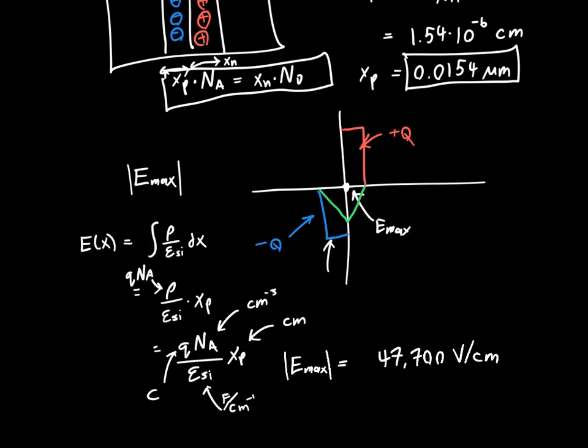If we want to know the direction it's pointing, we just know that it's pointing from the positive charges to the negative charges, but the magnitude is 47,700 volts per centimeter. If you wanted, you could convert that to volts per micron, volts per meter, whatever you wanted. Generally, we like to put quantities in terms of the most useful units that make the most sense for whatever application you're doing. If you're measuring the electric field over a very tiny distance, you might be interested in microns, but if you're measuring it over a larger distance, you might be interested in centimeters.